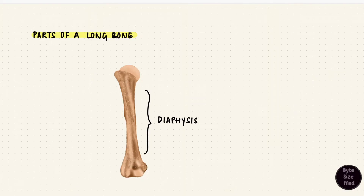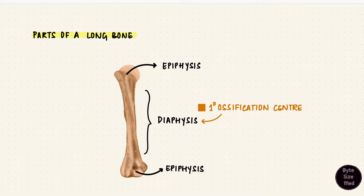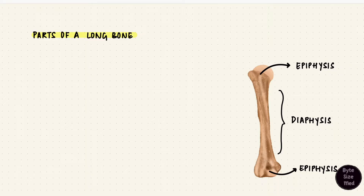Long bones have different parts. The shaft, which is the longest part of the bone, is called the diaphysis. The bulbous ends are called the epiphyses. Bones form from ossification centers that eventually fuse — usually the primary ossification center forms the diaphysis, and the secondary ossification centers form the epiphyses.